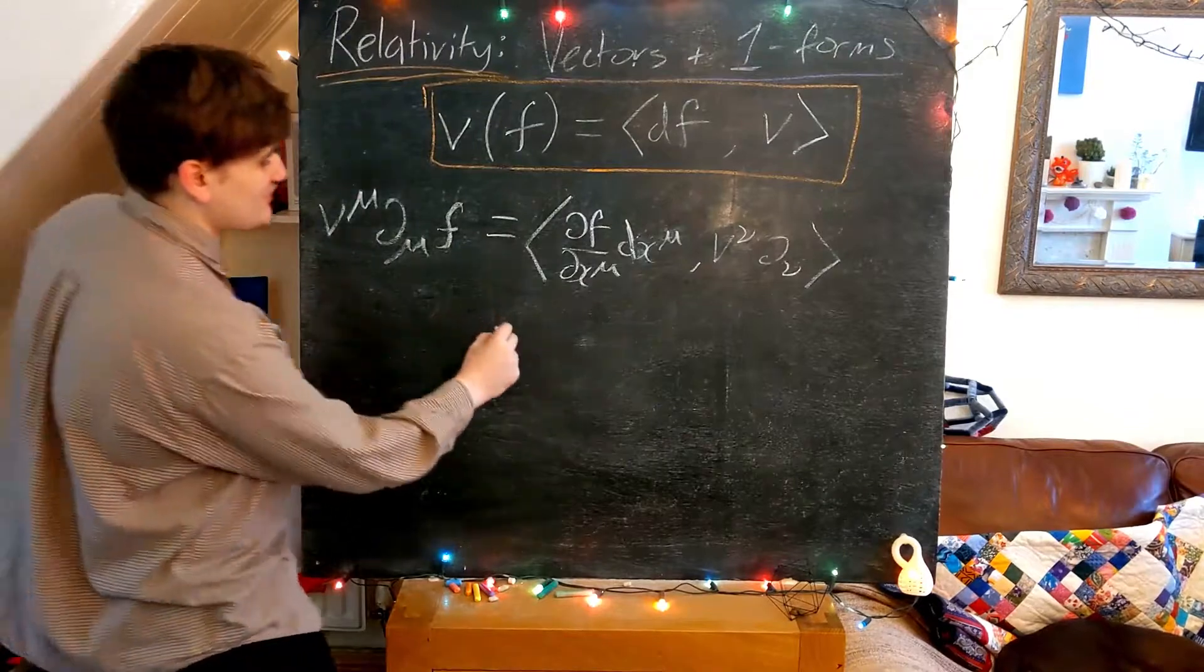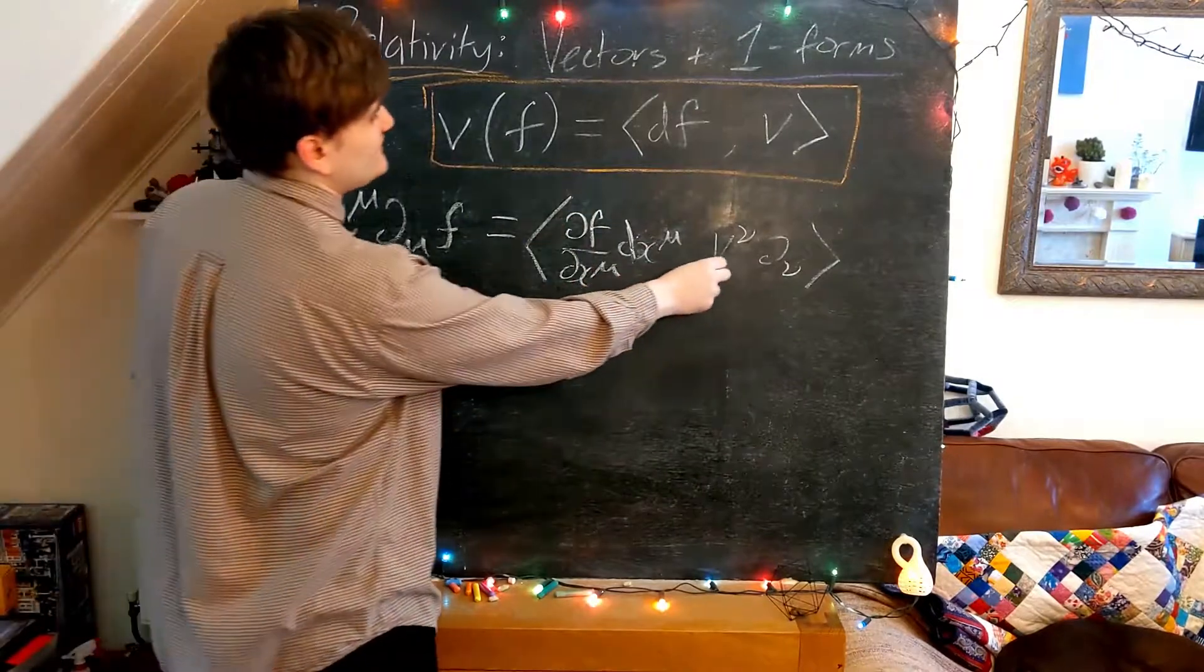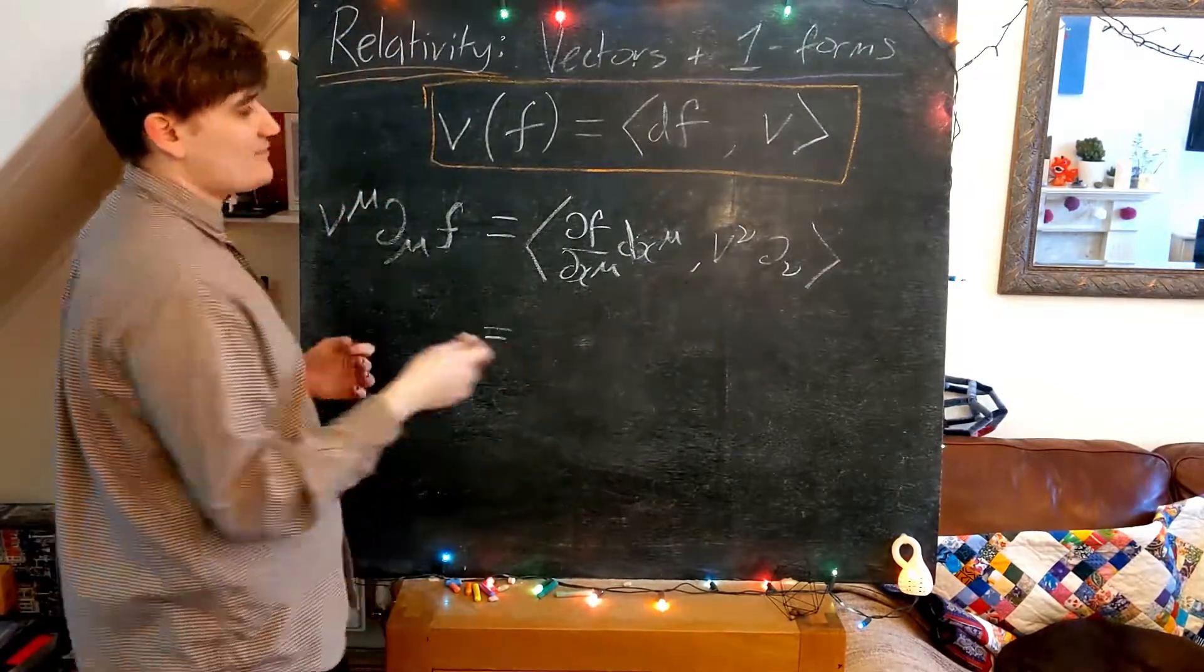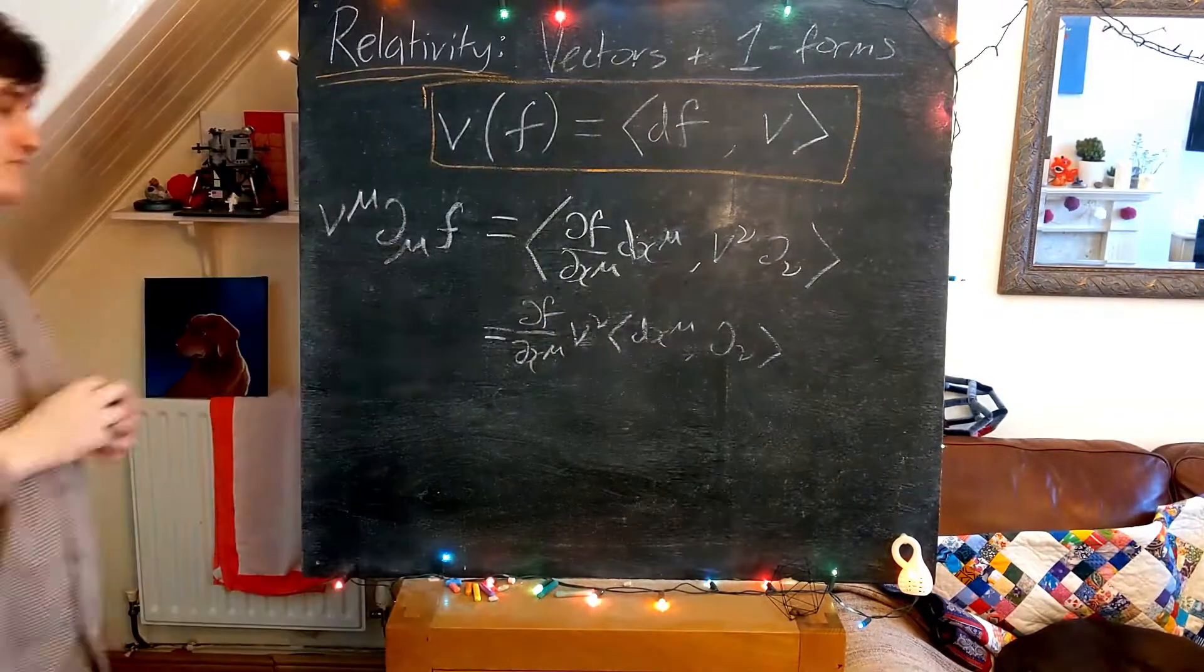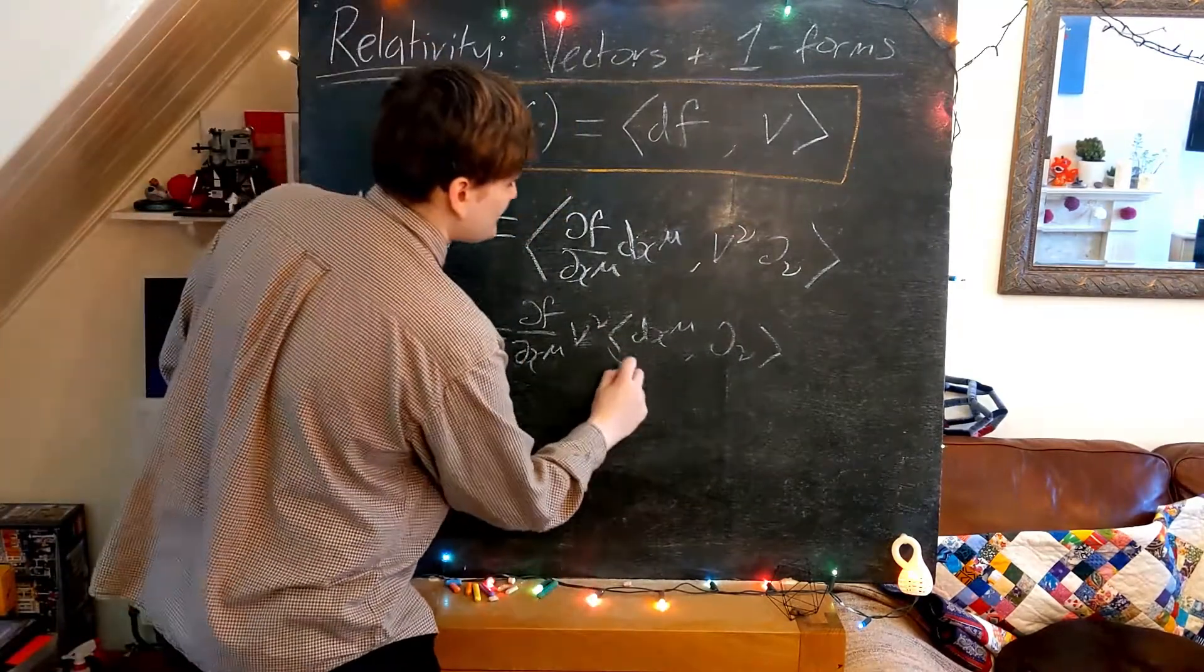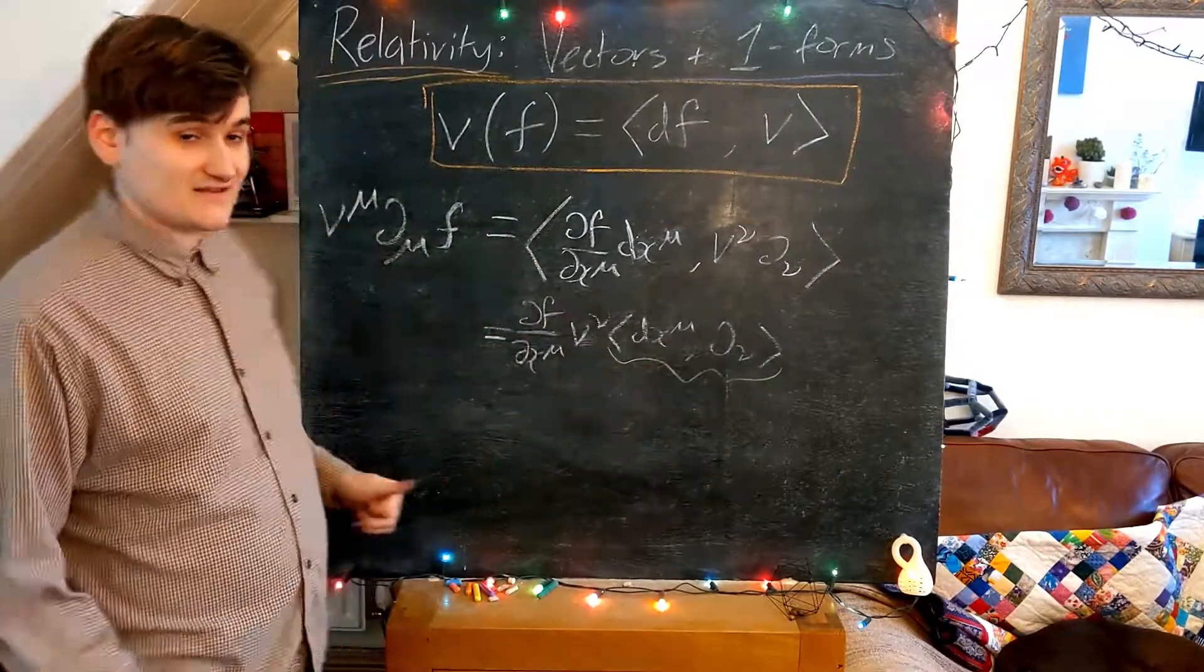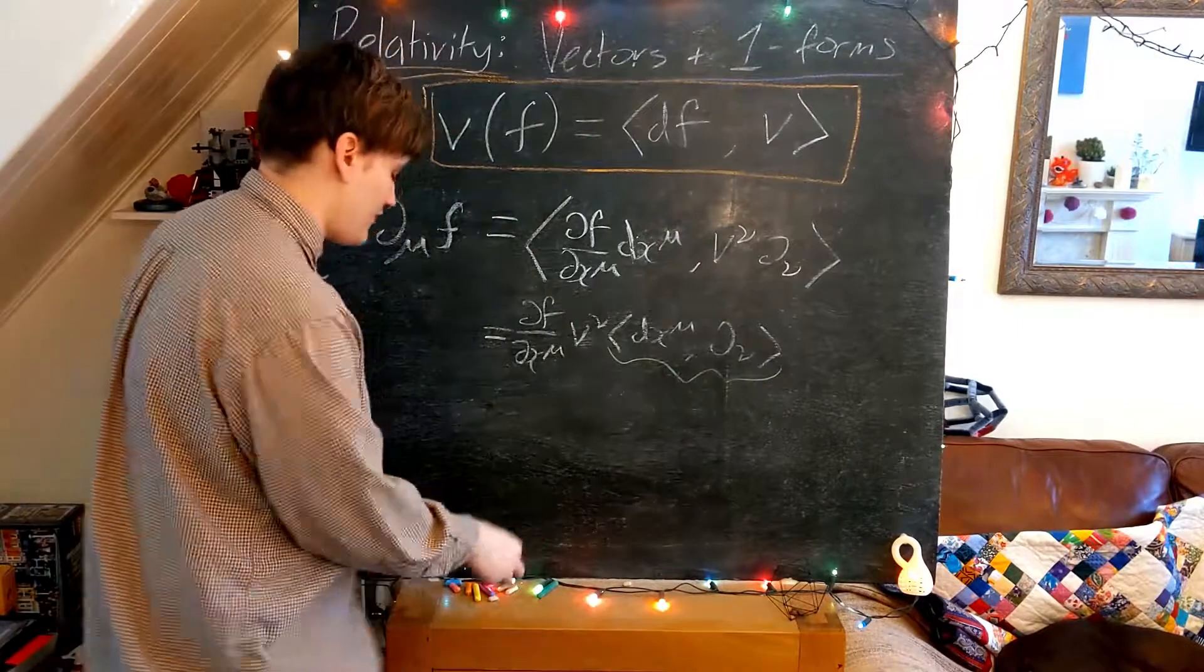So how do we proceed with this expression now? Let's leave the left-hand side as is and work with this. So these df/dx^μ's and these v^μ's, essentially they're just real numbers. So they can be pulled out of this map and just be left at the front as scalar multiples. And now what we're left with here, this expression in the angled brackets, the map of the basis one-form with the coordinate basis, this is now just simply defined, or it's just going to give us the Kronecker delta.